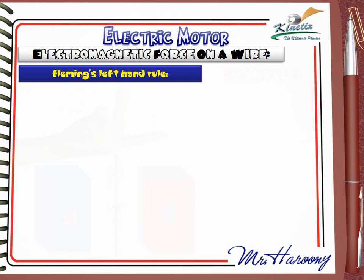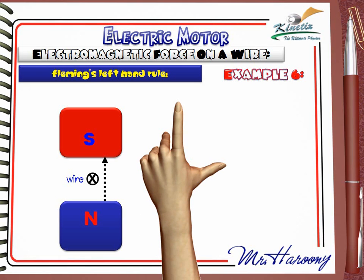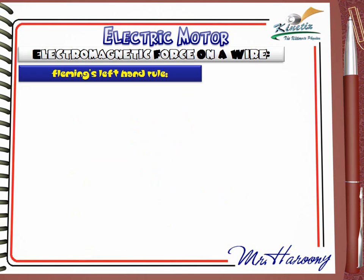Example 6: Note that a circle with an X or cross inside it indicates a wire perpendicular to the page where the current is going into the page. The dotted black arrow indicates the magnetic field direction from north to south. Applying Fleming's Left Hand Rule: the first finger points with the magnetic field upwards; the second finger gives the current direction as into the page. The wire will be pushed to the right, as shown by the thumb.